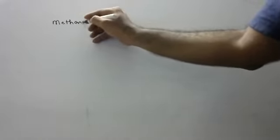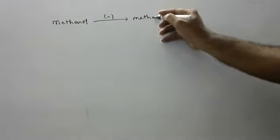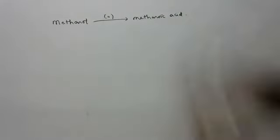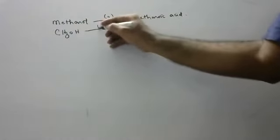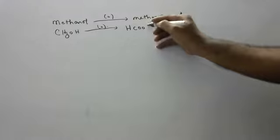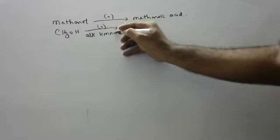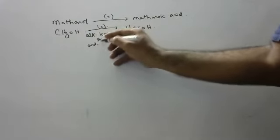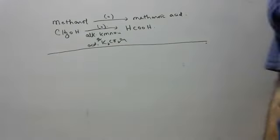So now the first alcohol — can anyone name what is the first alcohol? Methanol. Methanol on oxidation gives methanoic acid. The formula of methanol is CH3OH. On oxidation it gives HCOOH, which is methanoic acid. This is done in the presence of alkaline potassium permanganate or acidified potassium dichromate.